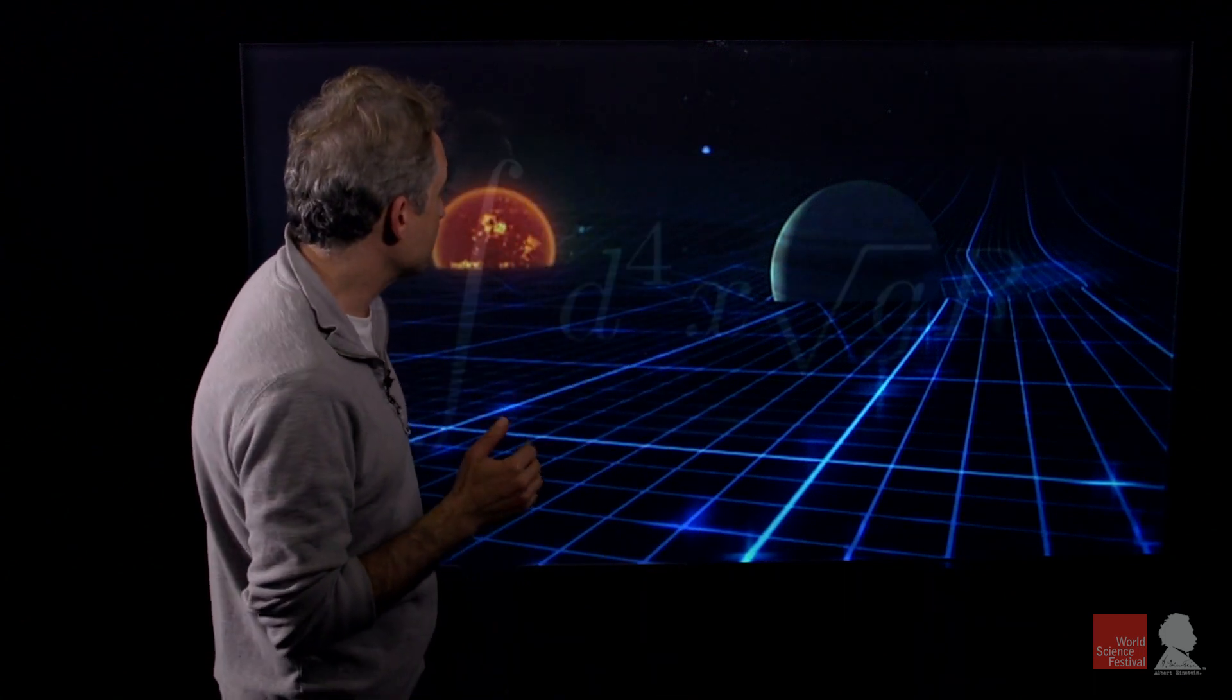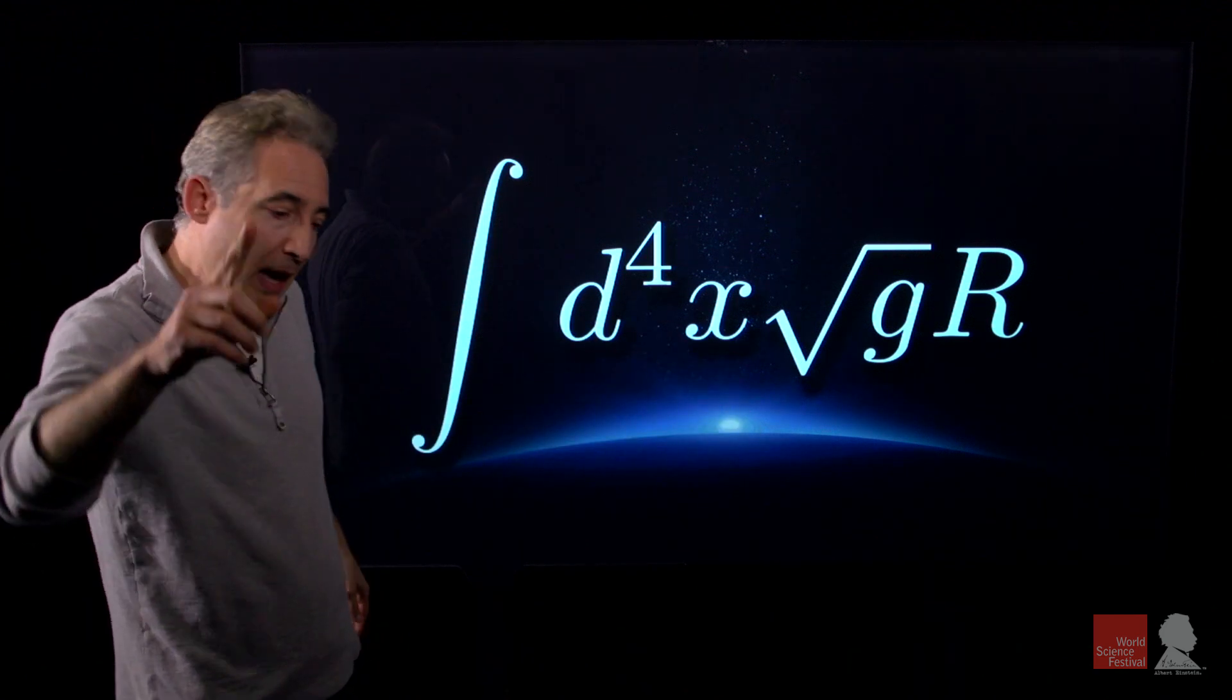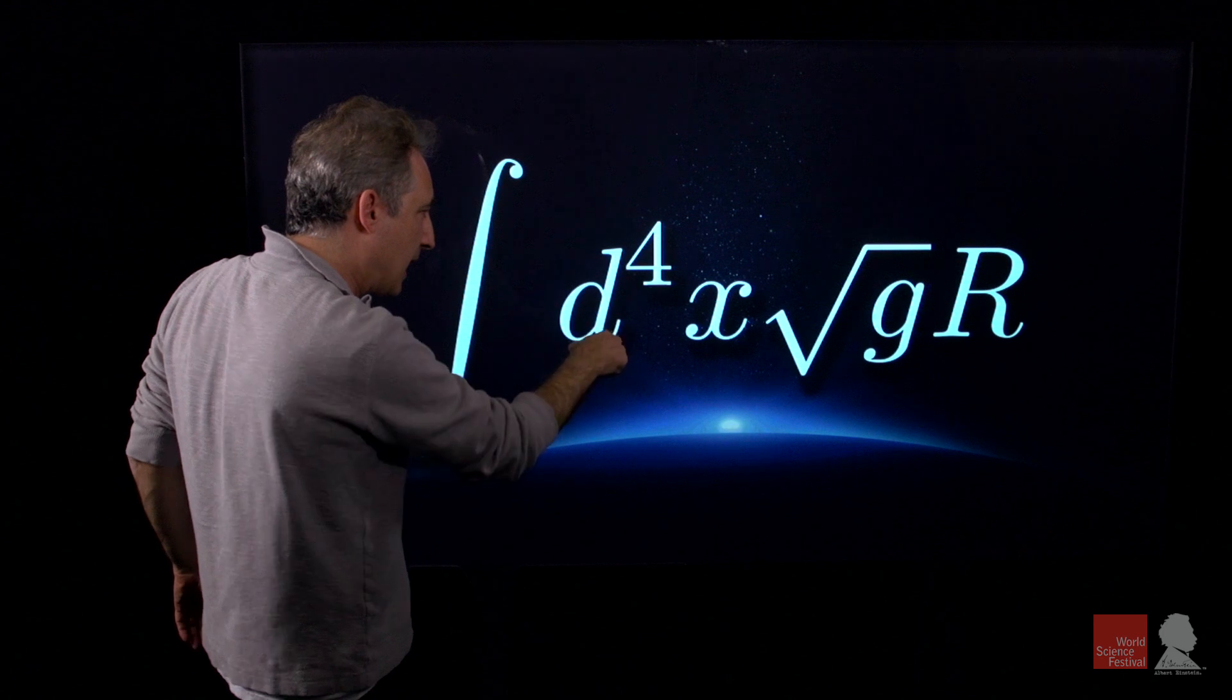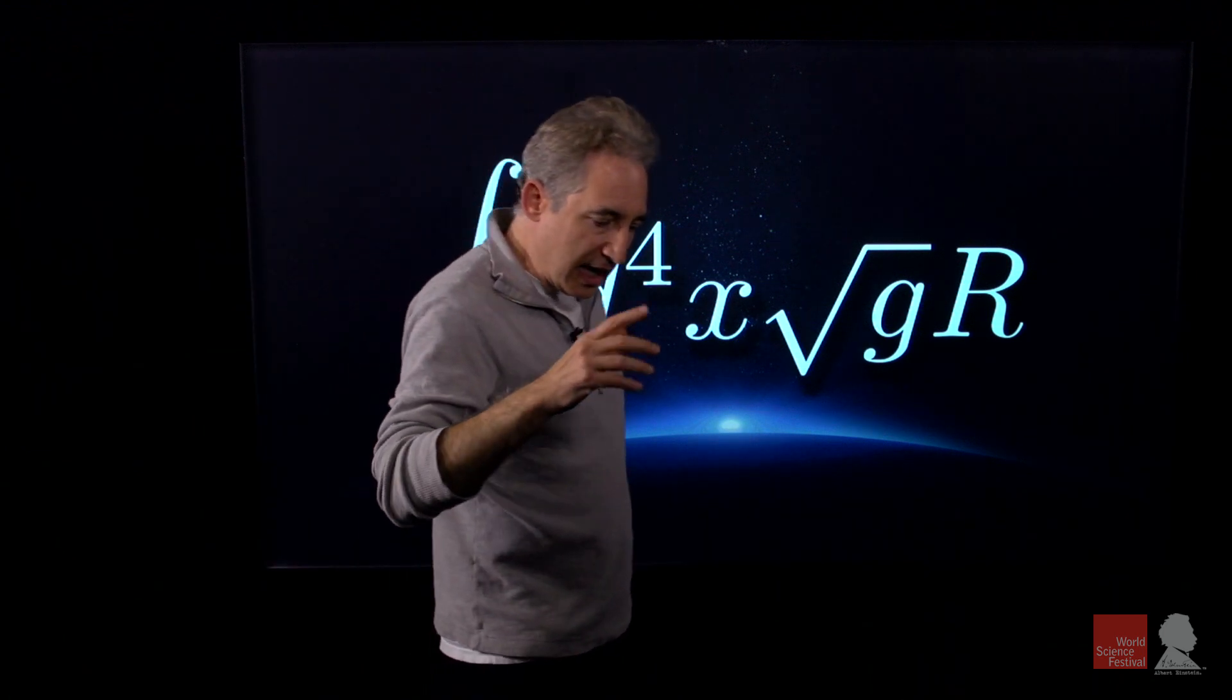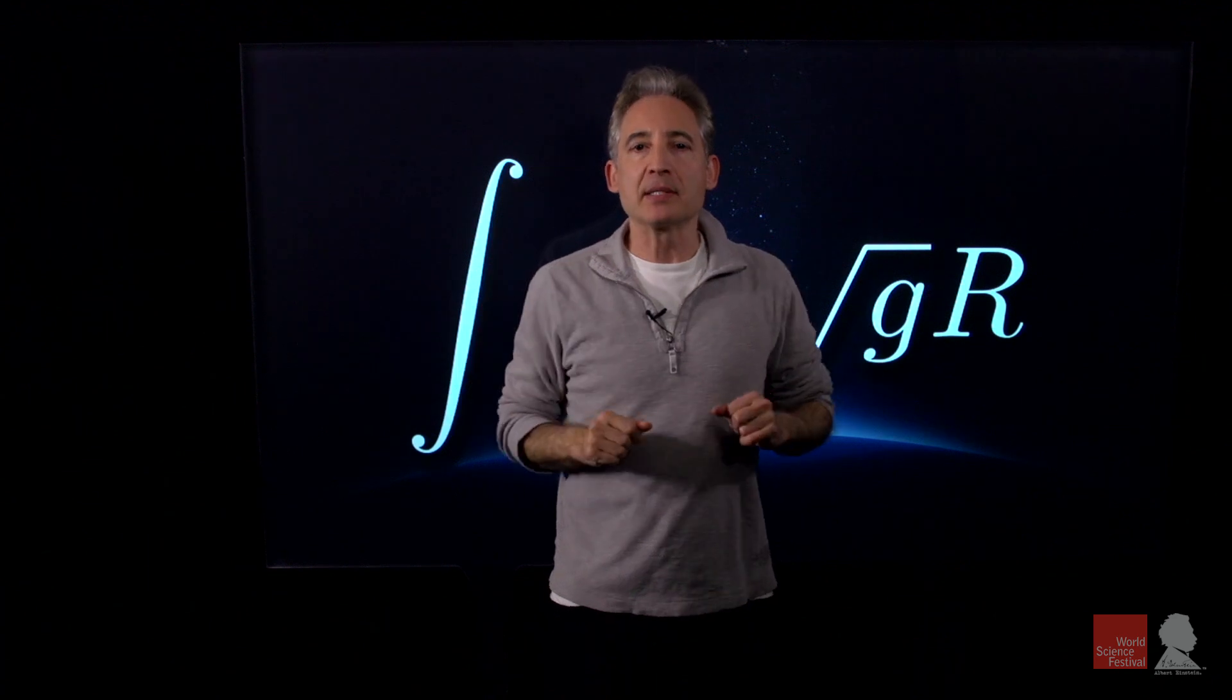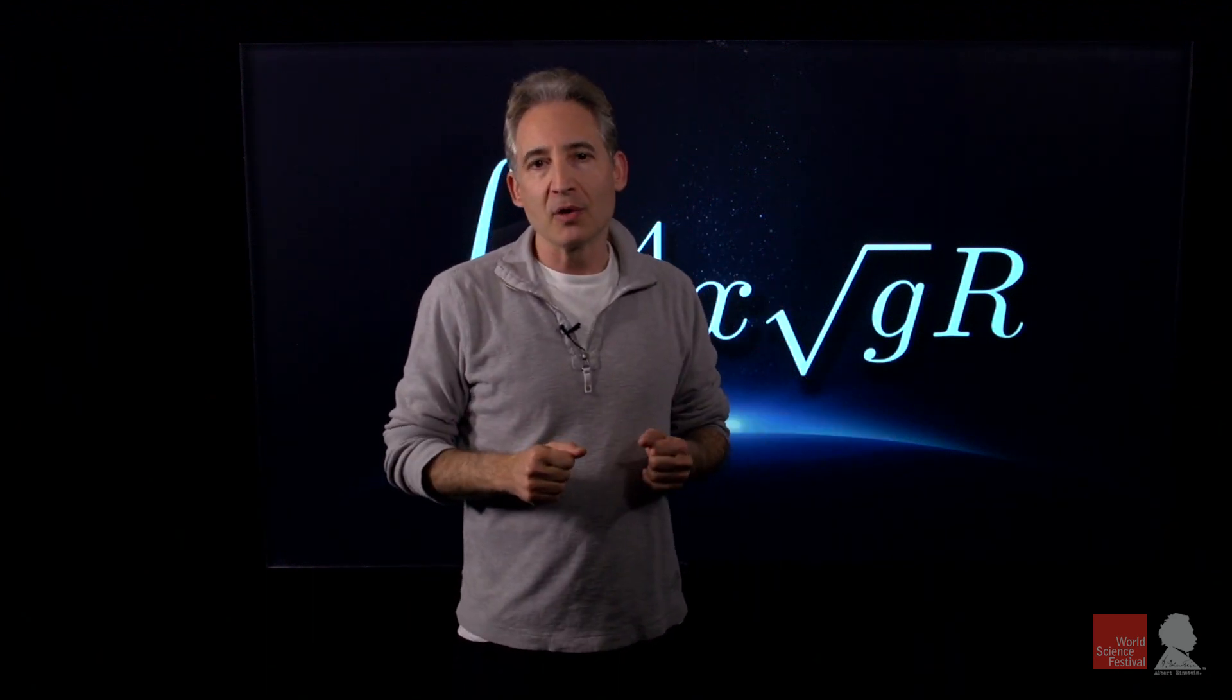But what about Einstein's competitor, David Hilbert? Well, David Hilbert came up with his own version of the equations, usually expressed in this mathematical form. But in the published paper in which Hilbert gave this equation to the world, Hilbert made it abundantly clear that he believed that Albert Einstein deserved credit for the discovery of the general theory of relativity.